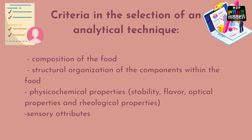In the process of analyzing foods, four properties are taken into account: the composition of the food; the structural organization of the components within the food; the physicochemical properties such as stability, flavor, optical properties, and rheological properties of the food; and the sensory attributes. Each of these properties is examined through various quantitative and qualitative analytical methods.